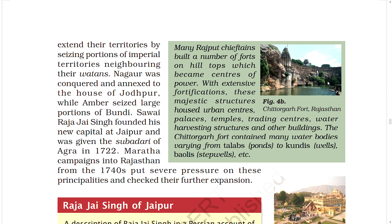Sawai Raja Jai Singh founded his new capital at Jaipur and was given the Subadari of Agra in 1722. Many Rajput chieftains built forts on hilltops which became centers of power. With extensive fortification, these majestic structures housed urban centers, palaces, temples, trading centers, water harvesting structures, and other buildings. The Chittorgarh Fort, for example, contained many water bodies varying from talabs (ponds) to kundis (wells) and baulis (stepwells).